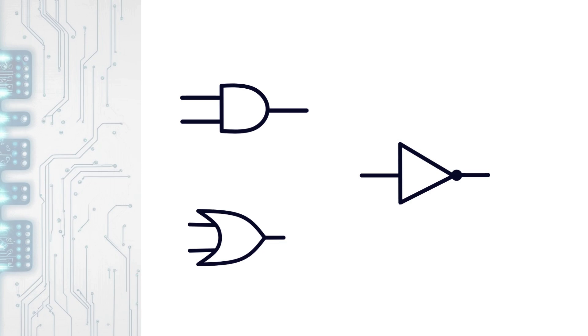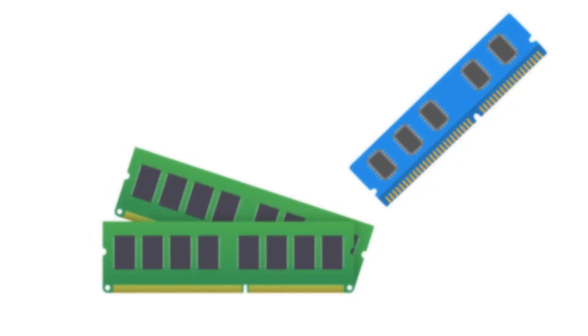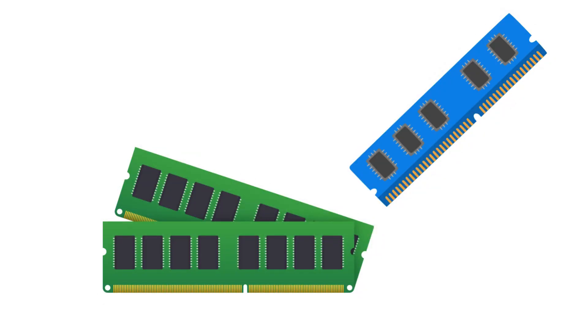You've probably seen logic gates like AND, OR, and NOT in textbooks, but have you ever stopped to ask why do we even study them? Well, these tiny circuits are the foundation of something massive: computer memory. From registers to cache to RAM, every piece of memory in your computer is built using these fundamental gates.